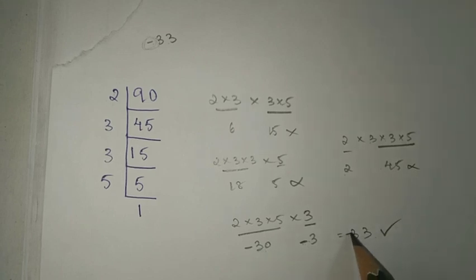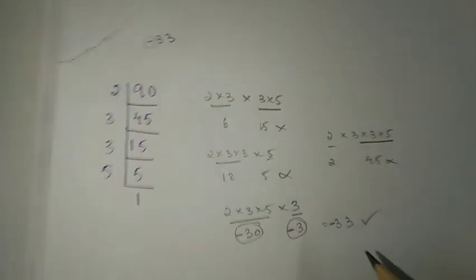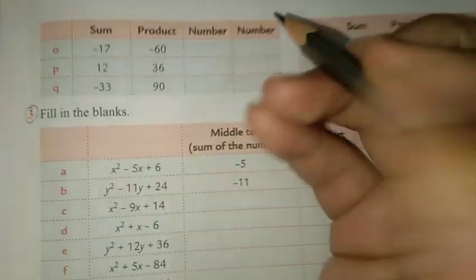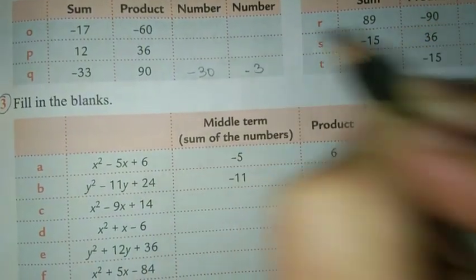When you multiply minus 30 and minus 3, you get plus 90, which is exactly the product. So the two numbers are minus 30 and minus 3.